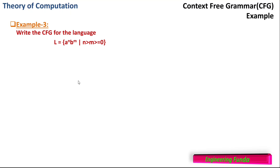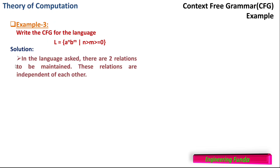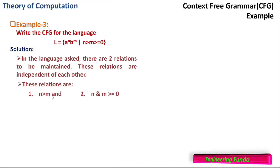We can use an existing grammar to generate the grammar for the given language. In this language there are two relations to be maintained, and these relations are independent of each other: n > m, and m ≥ 0. So I can divide this condition into two parts and work on them separately. These relations are n > m, and both n and m are greater than or equal to 0. Since the first condition n > m also applies, my n should be greater than 0.